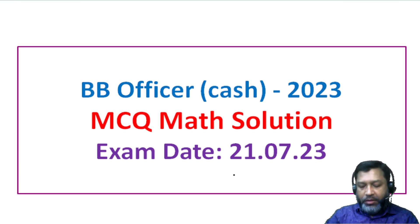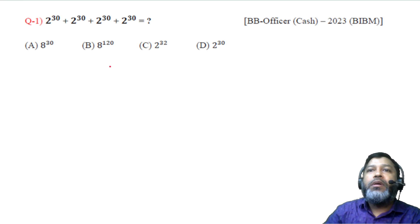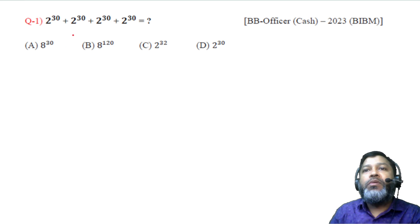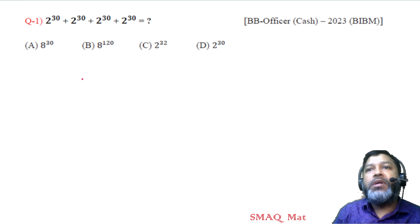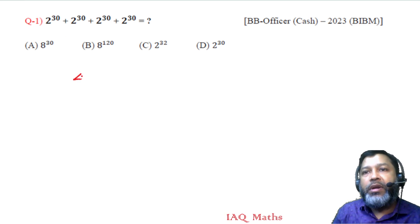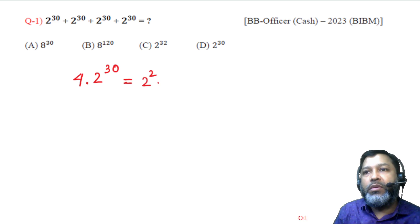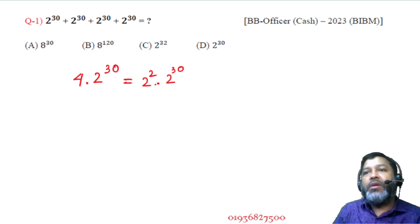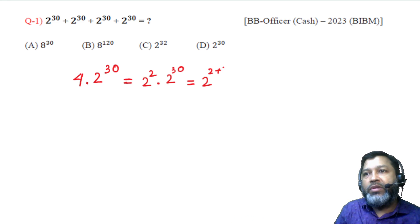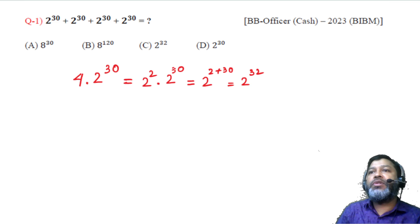Question number 1: Two to the power 30 plus two to the power 30 plus two to the power 30 plus two to the power 30 equals what? We have 4 times two to the power 30. Converting 4 to base 2 gives two squared, so two squared into two to the power 30 means we add the powers: 2 plus 30 equals 32. So the answer is two to the power 32. The answer is option C.